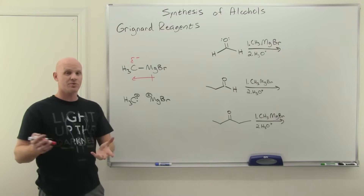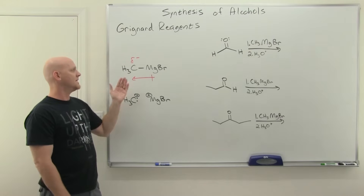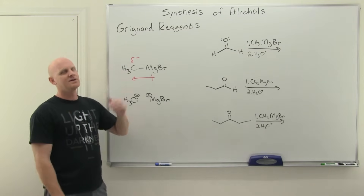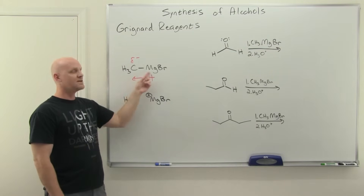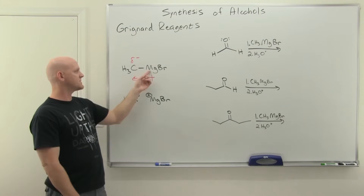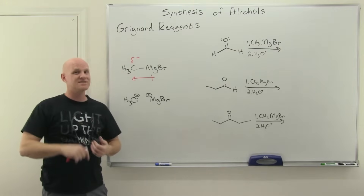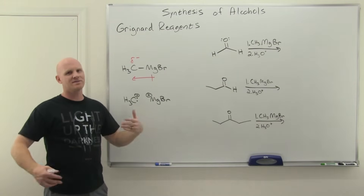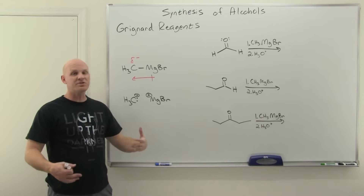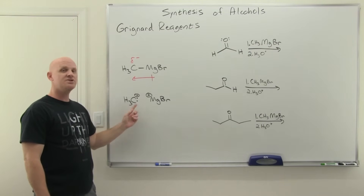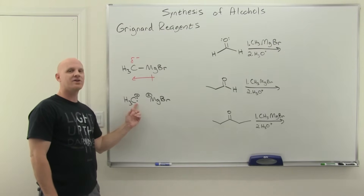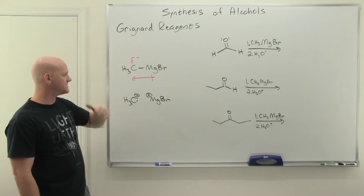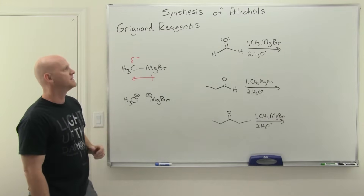The Grignard reagent reacts as if it is a carbanion, and a carbanion is both a strong base and a strong nucleophile. However, it's not a true carbanion. The key to ionic character is a difference in electronegativity of 1.7 or greater, and the difference between carbon and magnesium is just slightly less than 1.7, so this is technically a very polar covalent bond — about 50% ionic in character.